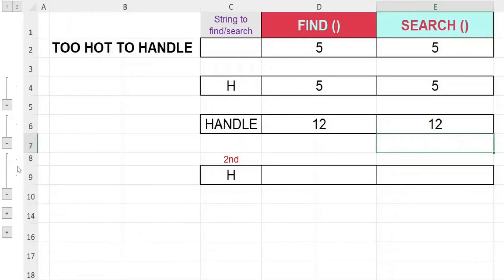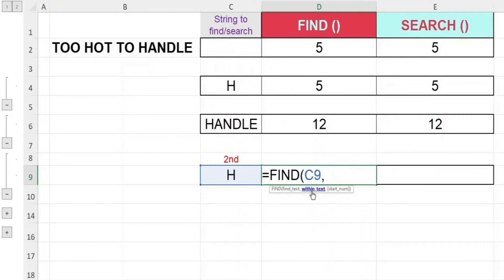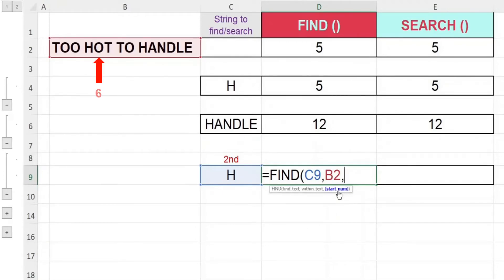Now you may ask, what if we want to find the position of the second H instead of the first? I'll show you how this can be done by inputting the third argument, which we have yet to touch on. Key in equal, then FIND, open bracket. First argument, cell C9, comma. For the second argument, we'll reference to cell B2. And for this time round, we will key in the third argument — the third argument will instruct the function which position to start searching for the character in the text string. Since the first H is at position 5, we will instruct the function to start searching at position 6. Close off bracket, hit enter.